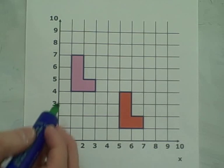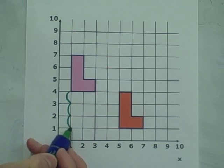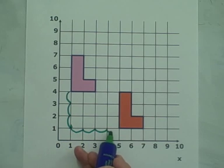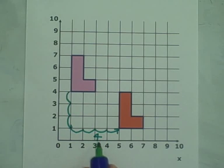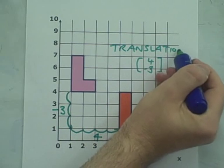This is a translation. The shape has just been moved. Choose a point on the object and count squares to the corresponding point on the image. We have traveled 4 to the right and traveled down 3, so the column vector is (4, -3).